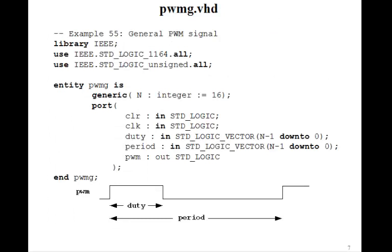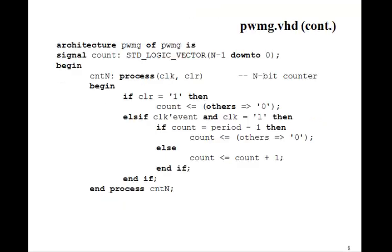So let's write a modified PWM program. We'll make it an n-bit one, generic. Here I set the integer to 16 for default, but if you want an 8-bit one, then in the port map statement where you have your generic map, you just set it to 8. And then here's our duty, would be n minus 1 down to 0. Period is n minus 1 down to 0. And then this is just similar to what we had before. We need an n-bit counter.